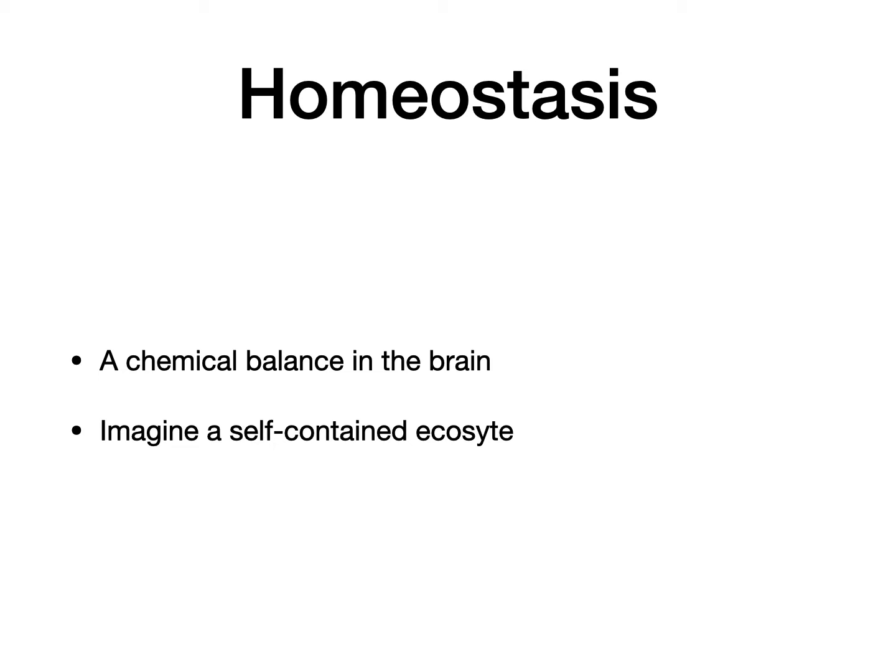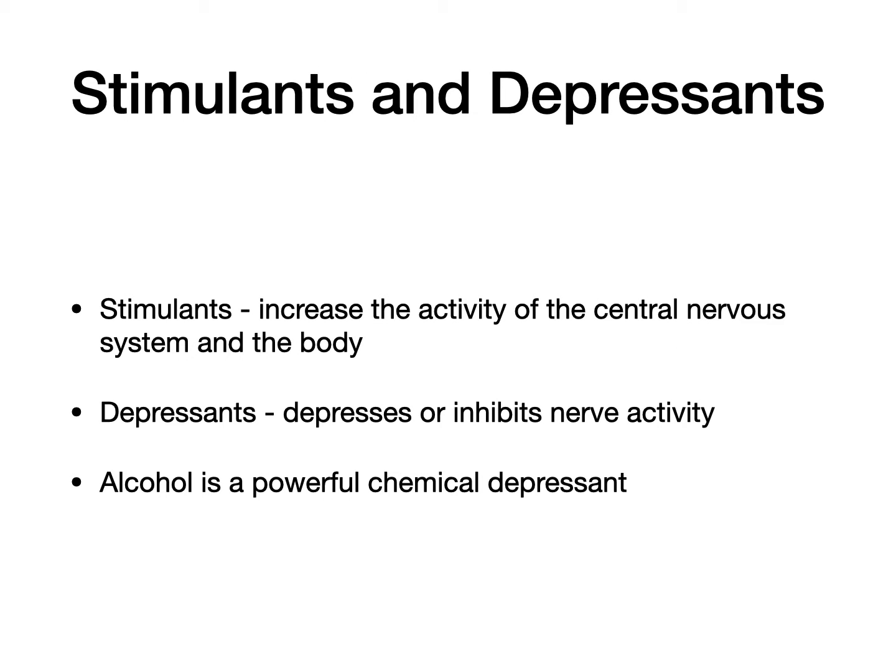I think it's useful to imagine a self-contained ecosystem — something where everything's working very, very well in balance. But the problem is, of course, when you introduce something externally. Although there are numerous different chemicals, drugs, and hormones that are created and excreted by the brain, it's useful to divide them into two: stimulants and depressants. Stimulants are the things that stimulate us — they increase the activity of the central nervous system and body, things like adrenaline that make us feel more awake and more alert. On the other hand, we have depressants. When I'm using the term depressant, I'm using it in its chemical sense as something that depresses or inhibits nerve activity — things that make us feel more relaxed and calmer. Most people are fairly comfortable with this concept.